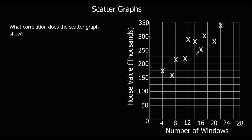Here we're looking at a relationship between the number of windows and the value of a house. The question says: what correlation does this graph show? We can see there's an upwards trend, so the points follow an upward direction. That means as the number of windows goes up, the value of the house goes up — and that's called a positive correlation.